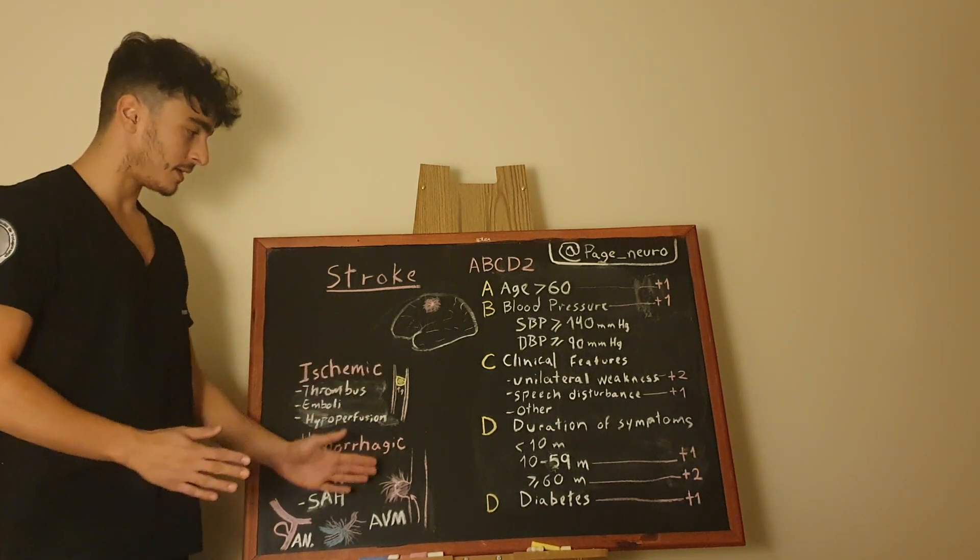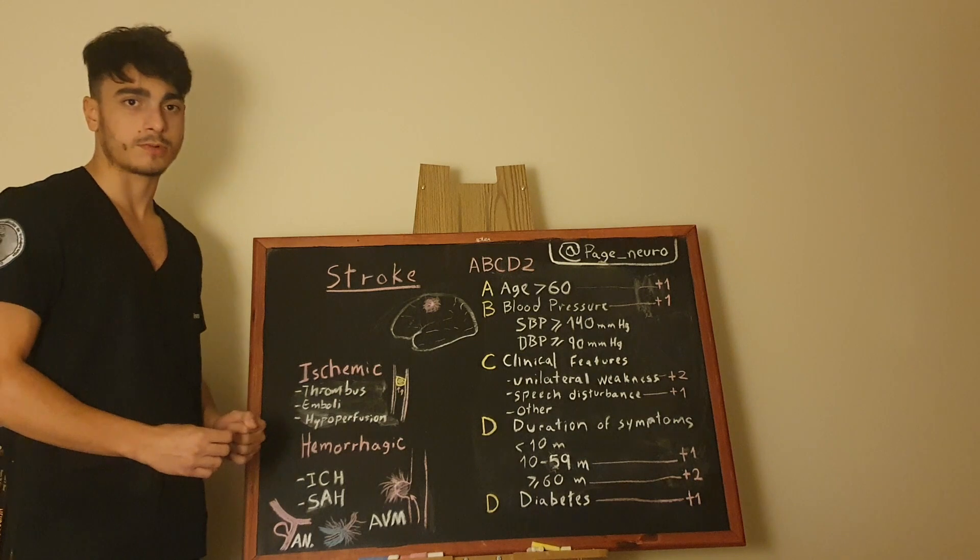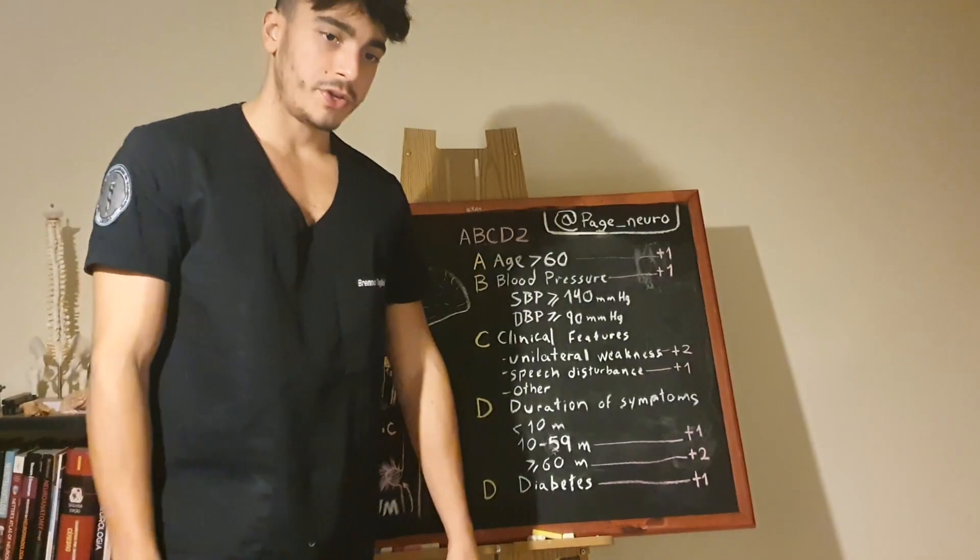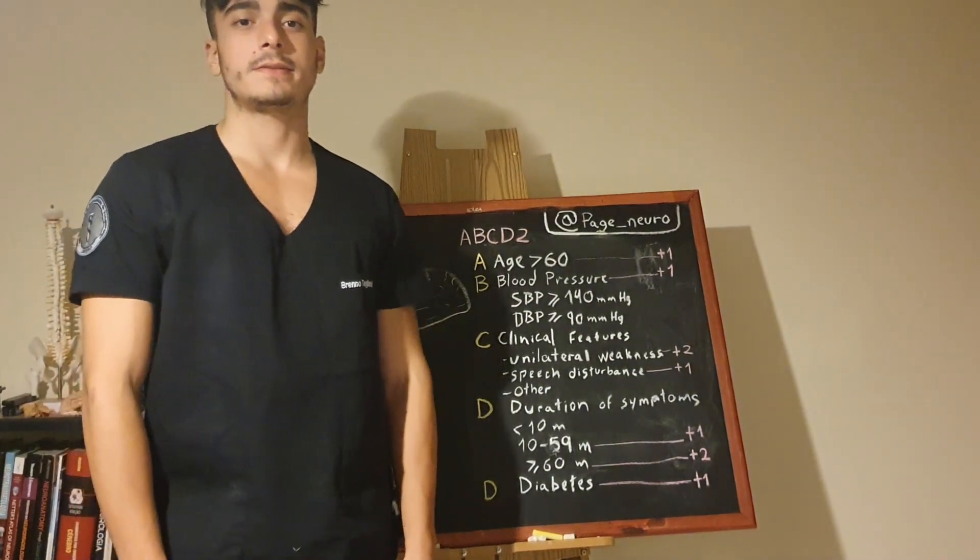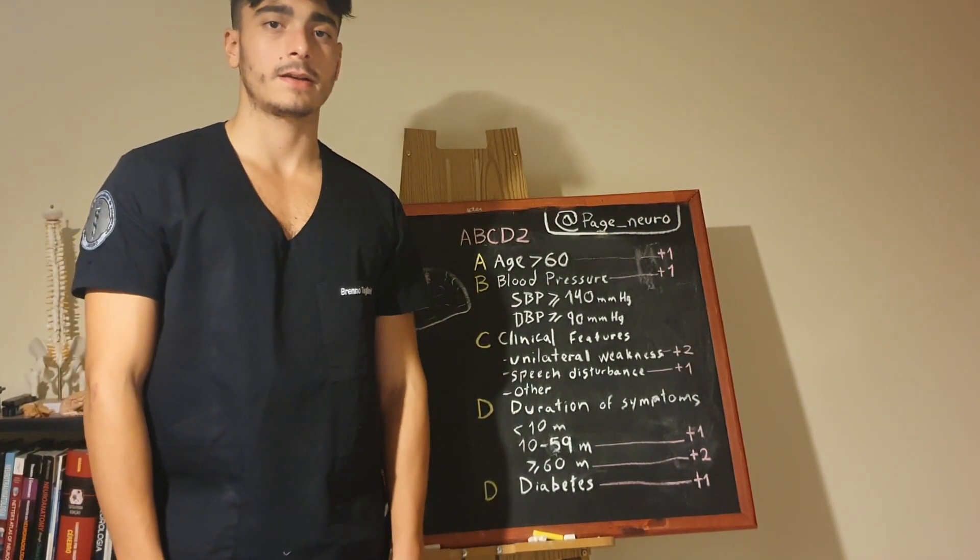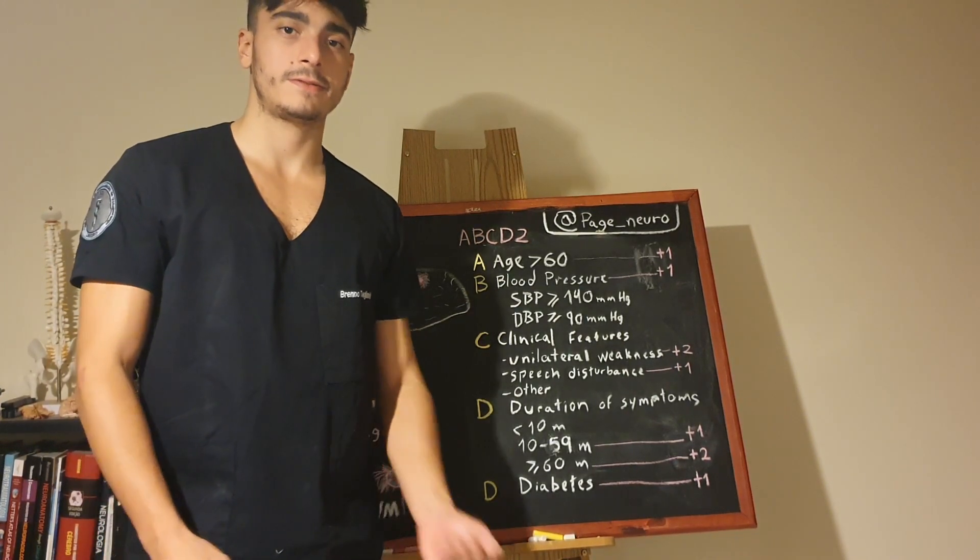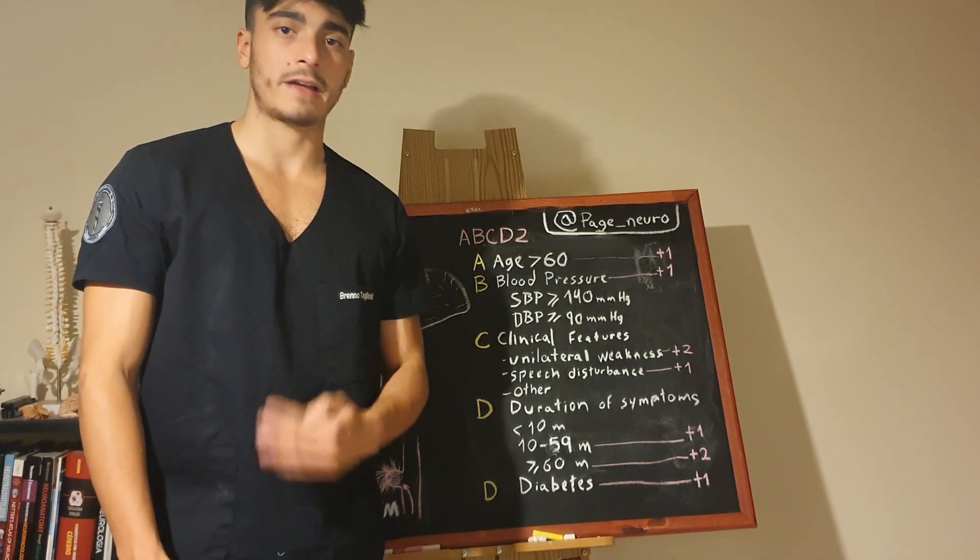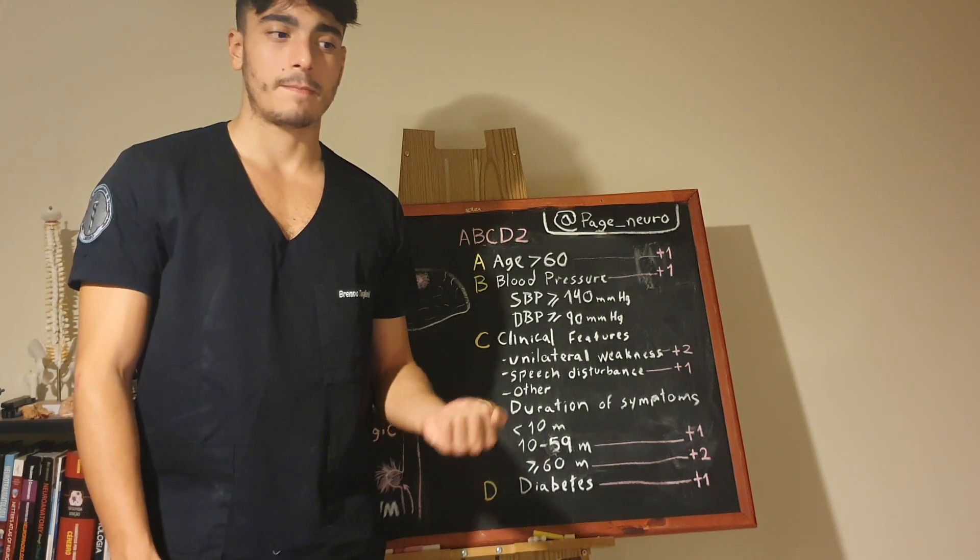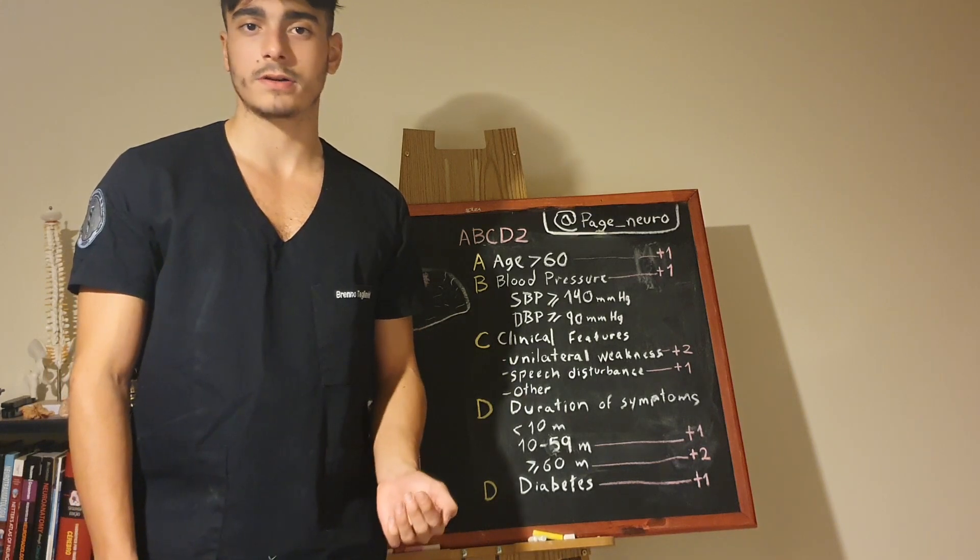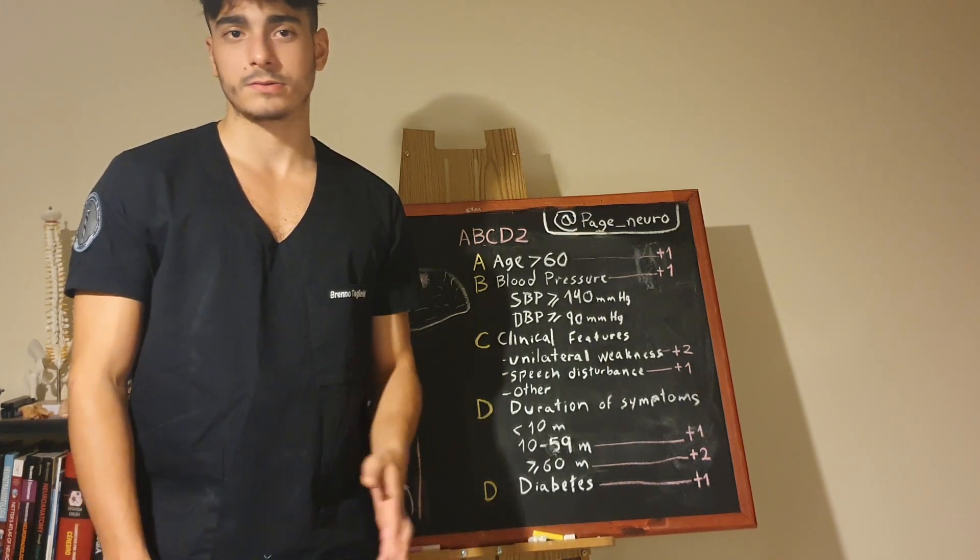So, these are the basic two types of strokes. Now, let's talk about ABCD2 and TIA. We also have TIA, that stands for transient ischemic attack. And the patient with TIA would have the deficit related or very similar to a stroke, but it usually will recover in like less than one hour, less than four, less than twelve, but usually it will recover one hundred percent.